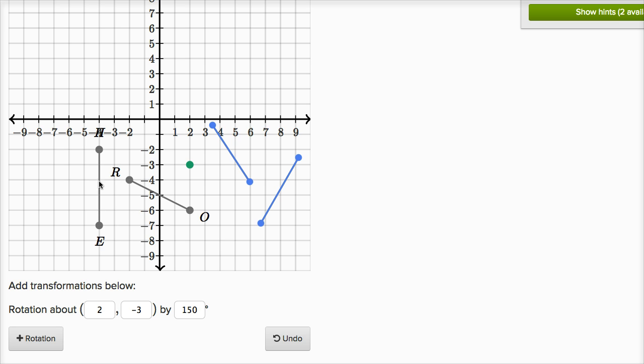So if you start with the set of points that represent line segments HE and RO, if you rotate them about the point (2, -3) by 150 degrees—and the convention is that that's going to be counterclockwise—we see that their images are going to be these two lines right over here.